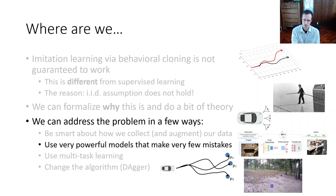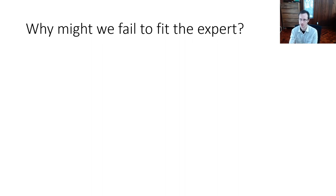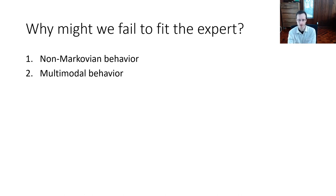Why might you fail to fit the expert behavior? If you can minimize the value epsilon, perhaps even epsilon times T squared might still be a small number. One reason is what I'll refer to as non-Markovian behavior — meaning the expert doesn't necessarily choose the action based only on the current state. A second reason is multimodal behavior — the expert takes actions randomly and their distribution over actions is very complex and might have multiple modes.